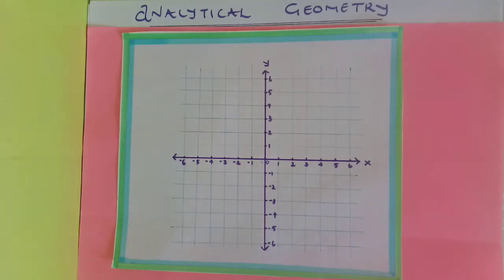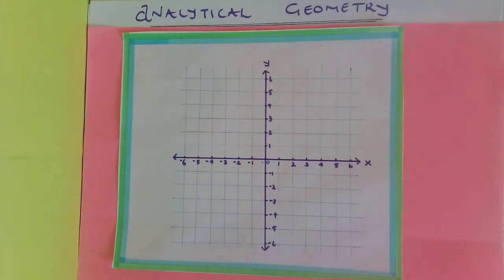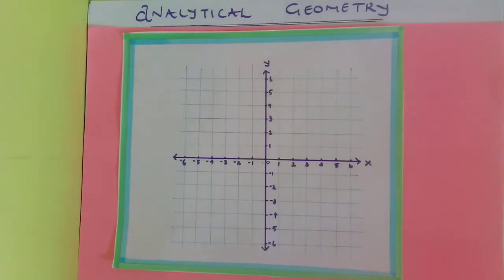Hello everyone, welcome to Academy Coordinates. In this video we're tackling analytical geometry, directed to grade 10s, but even if you're doing grade 11 or grade 12, grab that pen and paper. Analytical geometry is the study of geometric properties — we're going to study things like points, lines, and different relationships housed in a Cartesian plane.